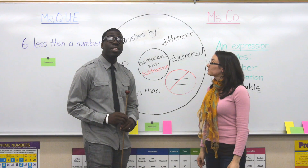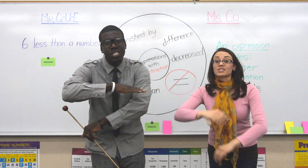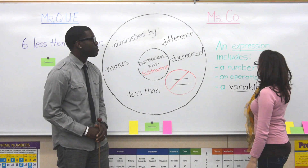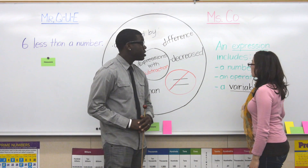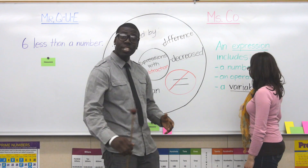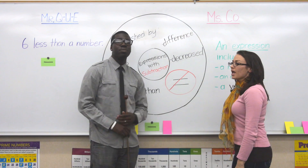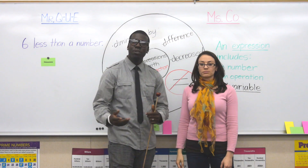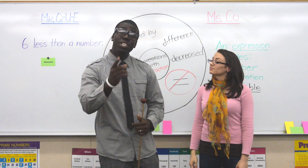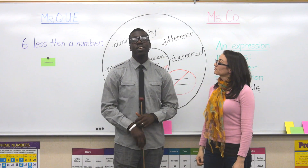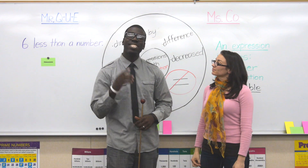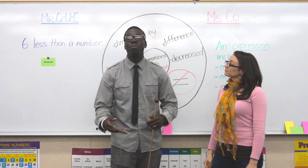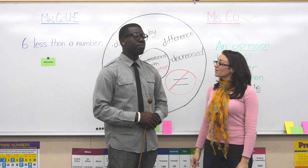The most important thing is no equal signs. Also, an expression includes a number, an operation, and a variable. And a variable — hey Q, what's a variable? Well, a variable — it's very simple. You can use any letter in the alphabet. Like I said on Mind of a Madman, we use variables to represent unknown numbers.